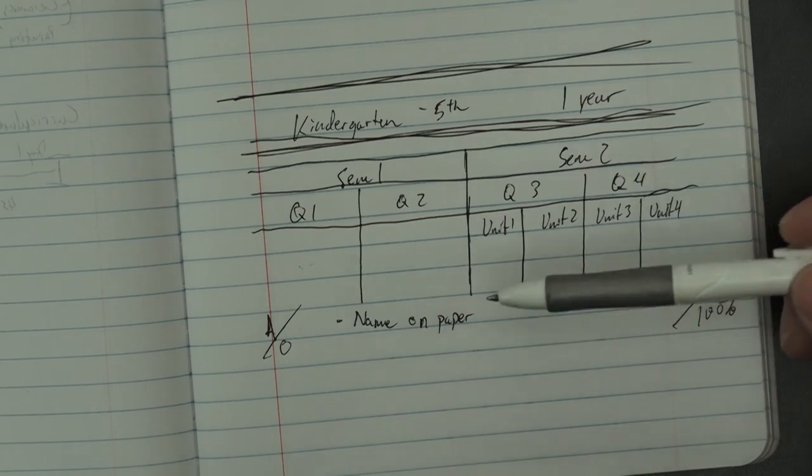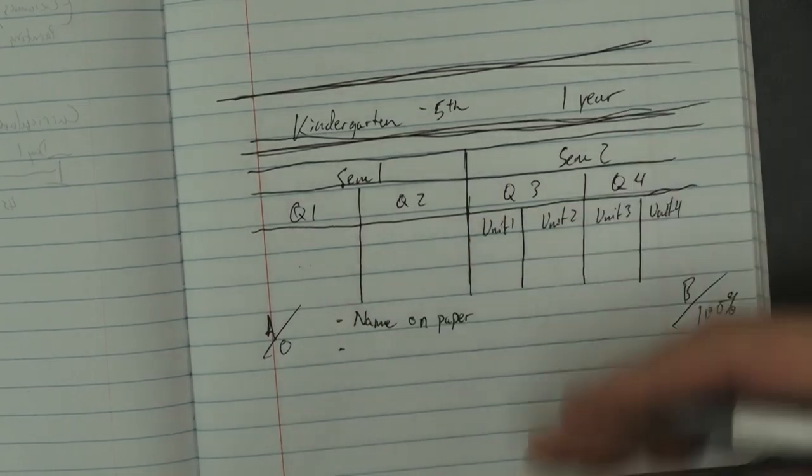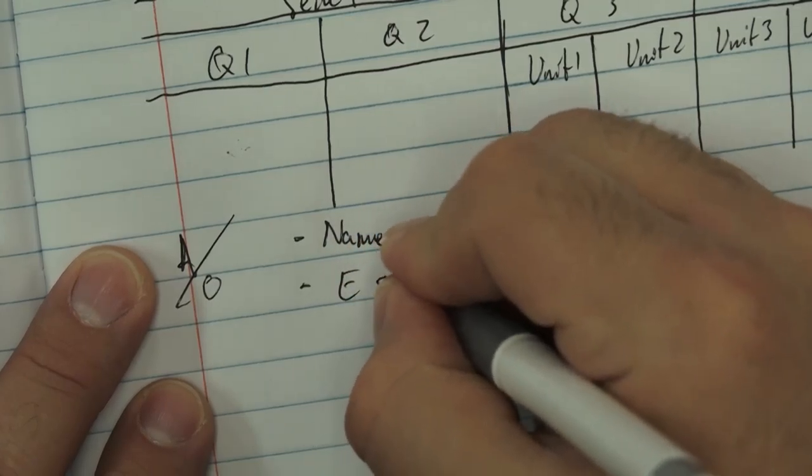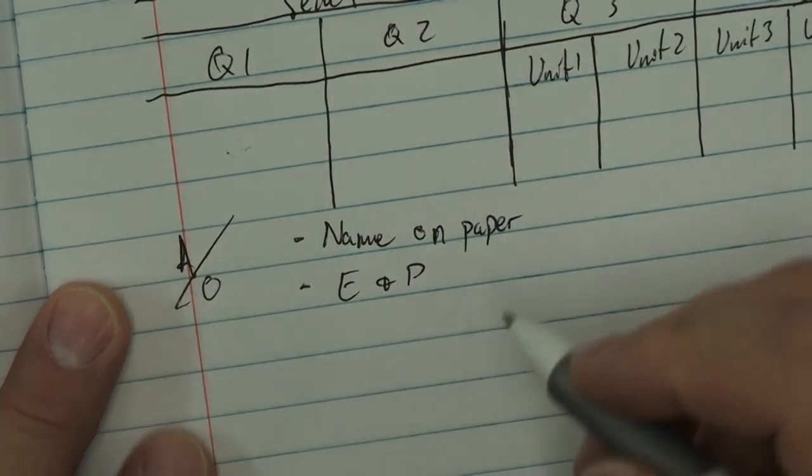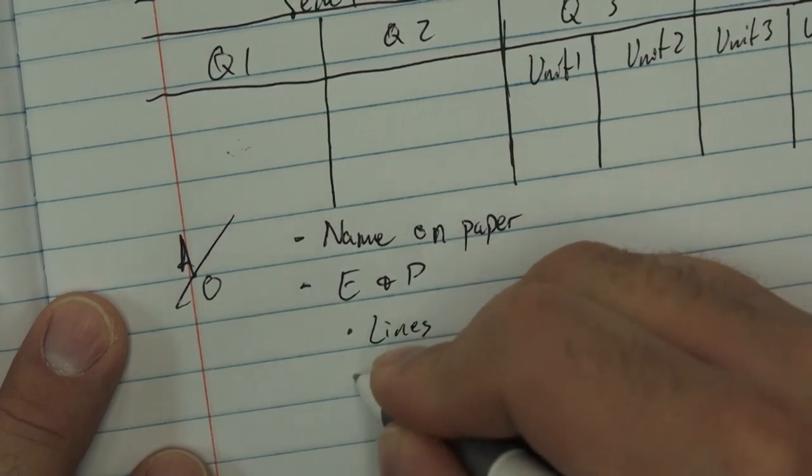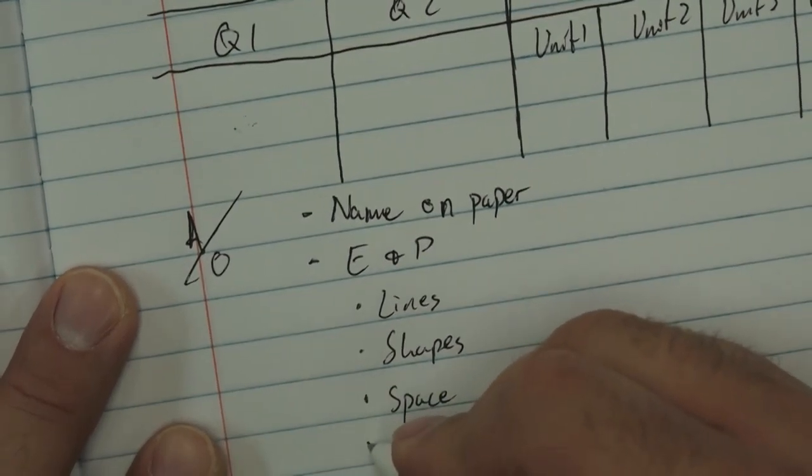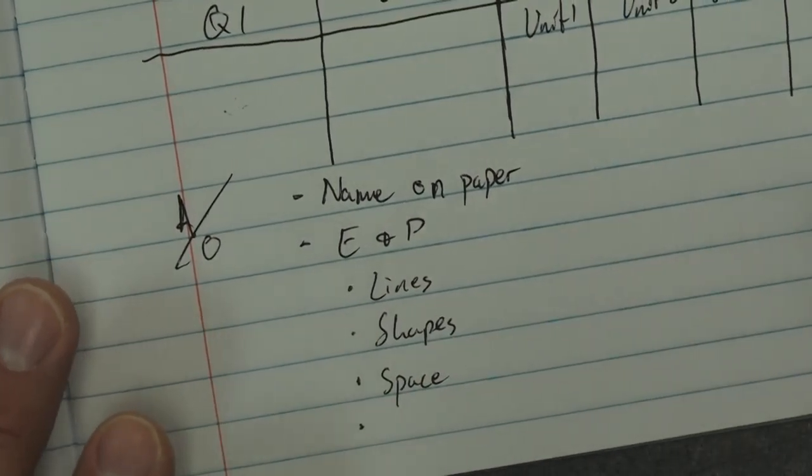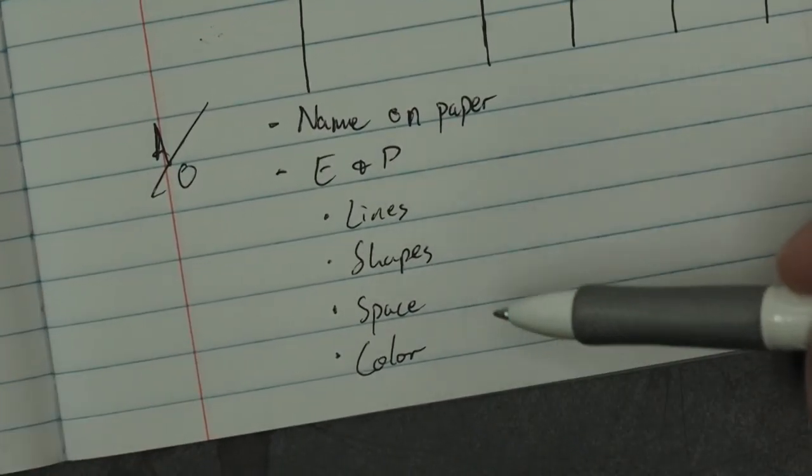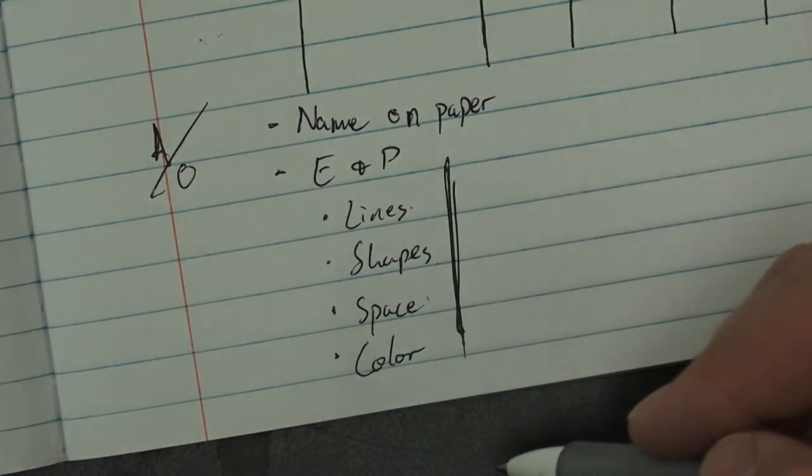It is one of the things where they identify with the creation of their artwork for themselves. Now after putting the name on the paper, let's go over basic elements of art. E and P - elements and principles, in case you're new to this. Lines, shapes, space, and color.